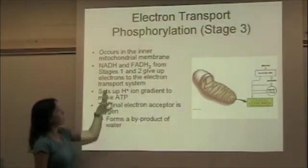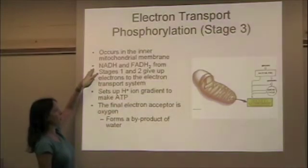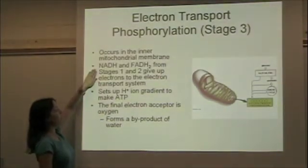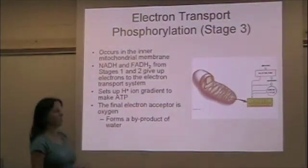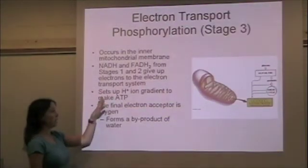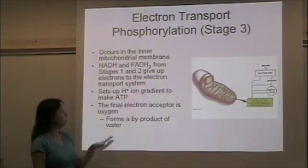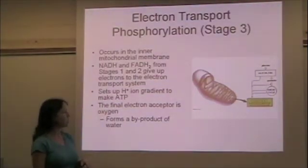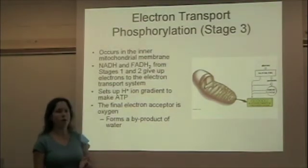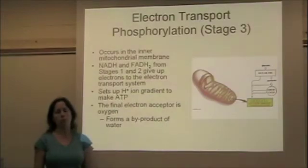The NADH and FADH2 from stages 1 (glycolysis) and 2 (the Krebs cycle) come and give electrons to the electron transport chain. The electron transport chain creates a hydrogen ion gradient, which finally makes the ATP. The final electron acceptor is oxygen, forming the byproduct of water. This is the general overview; now we'll go through it in more detail.